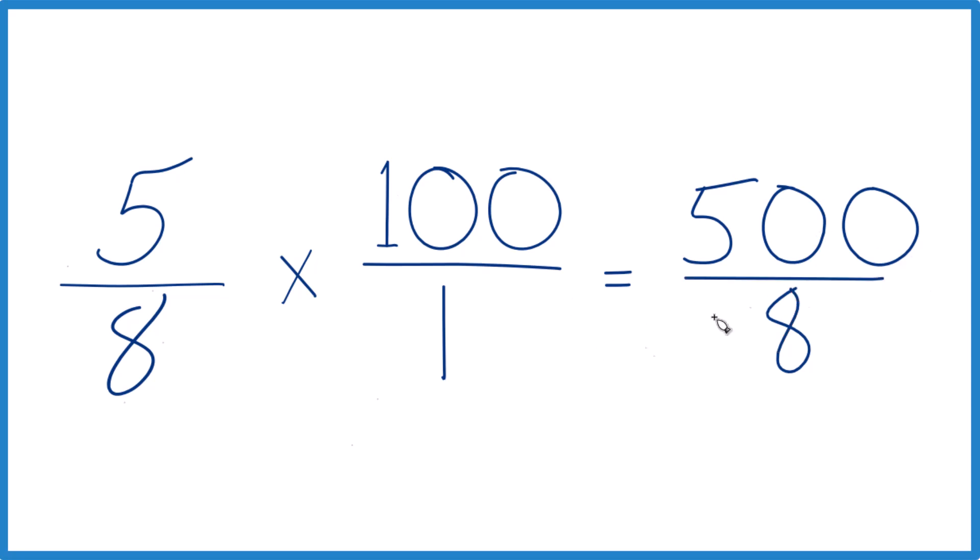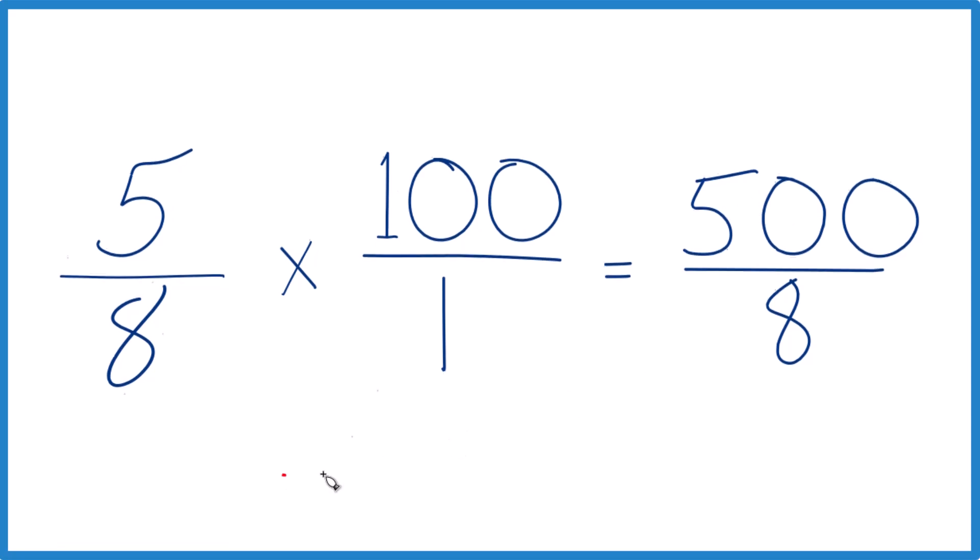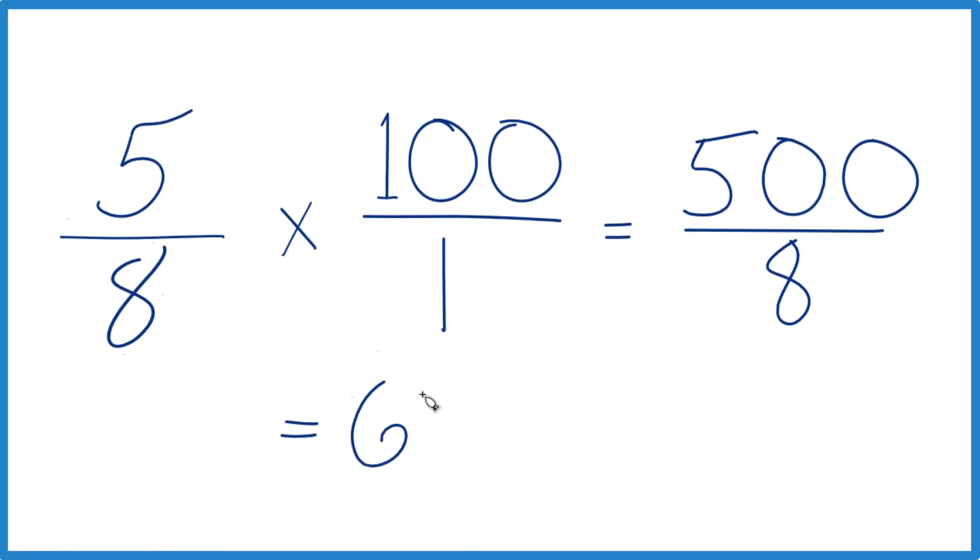So we could divide 500 by 8 and get a decimal, and we could change it to a mixed fraction as well. Let's do a decimal first. So if you divide 500 by 8, you end up with 62.5. So 5 eighths times 100, 62.5.